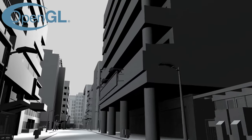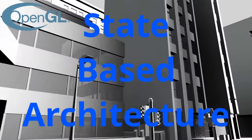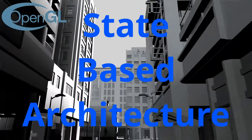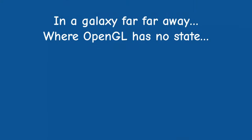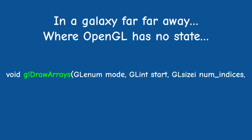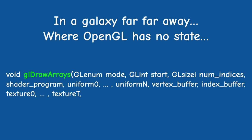OpenGL relies heavily on a state-based architecture. If this wasn't the case, every draw call would have had many dozens of parameters. In addition to the existing mode, starting index and number of indices to render, we would also need to specify the shader program, the uniform variables, the buffers, the textures and their parameters, and potentially many other bits of information. All of these are required even for the most basic rendering.